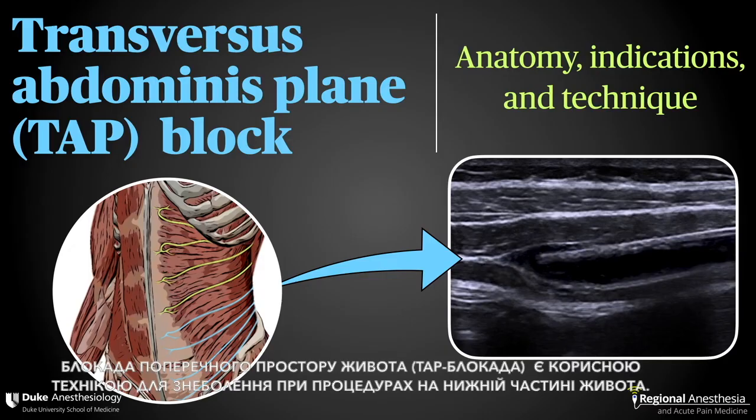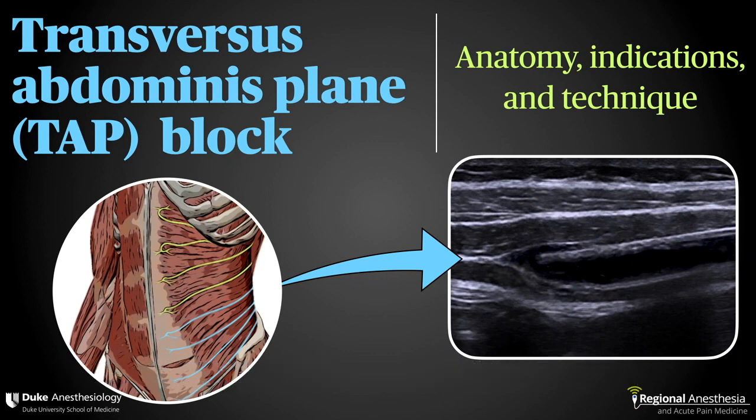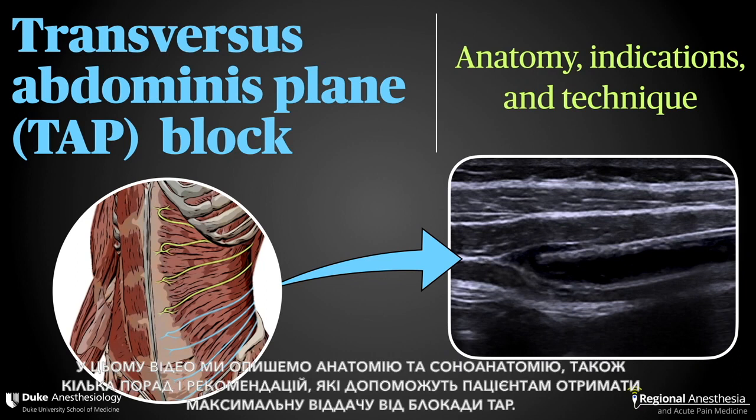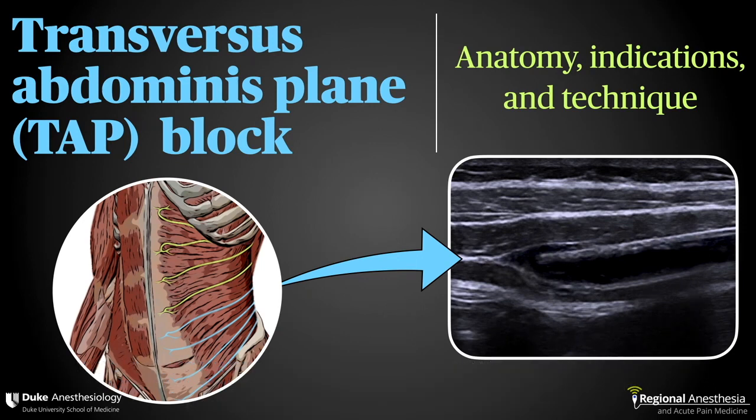The transversus abdominis plane block is a useful technique to provide analgesia for procedures on the lower abdomen. In this video, we'll describe the anatomy, sonoanatomy, and some tips and tricks to ensure your patients get the most out of your TAP blocks.